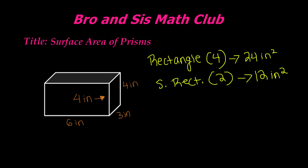So now that we know the area of these rectangles, we need to see that the big rectangles — there are four of those — and each has an area of 24 inches. So we need to multiply 24 by 4 to find the area of all four of these rectangles. So 24 times 4 gives us 96.